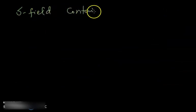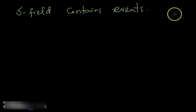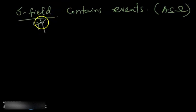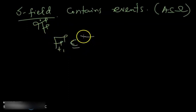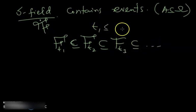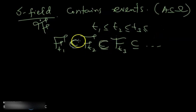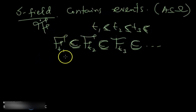We know that a sigma field contains events — subsets of omega, the sample space, are events. So the sigma field contains events. Now you have more than one sigma field in increasing order: F sub t1 contained in F sub t2 contained in F sub t3, and so on, where t1 ≤ t2 ≤ t3. That is the increasing family of sigma fields people also call a filtration.